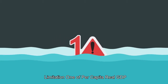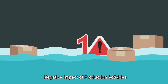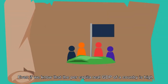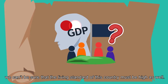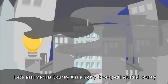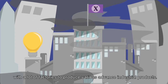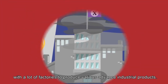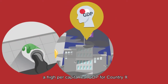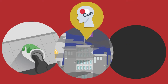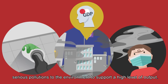Limitation 1 of per capita real GDP – negative impact of production activities. Even if we know that the per capita real GDP of a country is high, we can't be sure that the living standard of this country must be high as well. Let's assume that country X is a highly developed industrial country with a lot of factories to produce various advanced industrial products. Although industrial production creates a high per capita real GDP for country X, the factories also created serious pollution to the environment to support a high level of output.